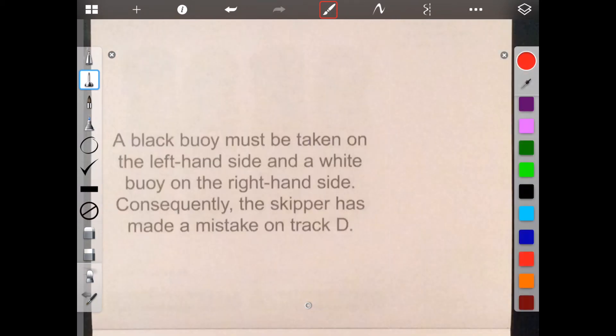Okay, a black buoy must be taken on the left-hand side and a white buoy on the right-hand side. Consequently, skipper has made a mistake on track D. Wow, okay. That was an interesting one. See you next time.